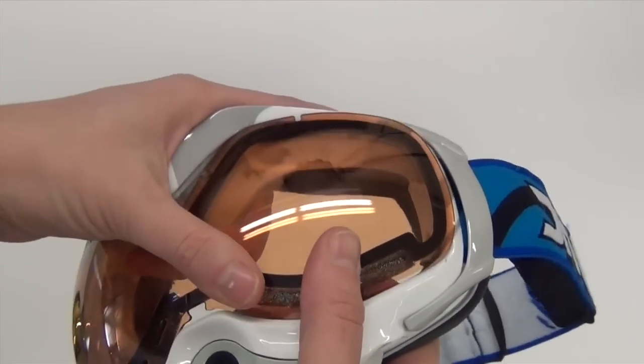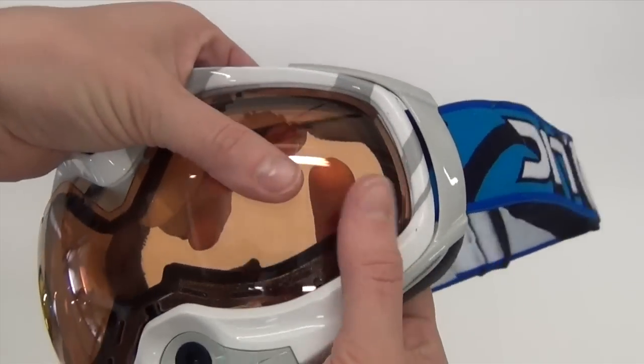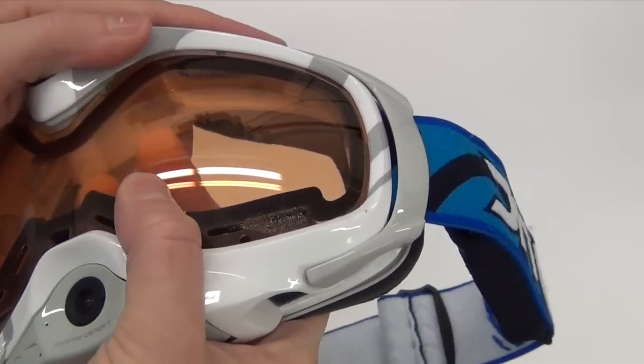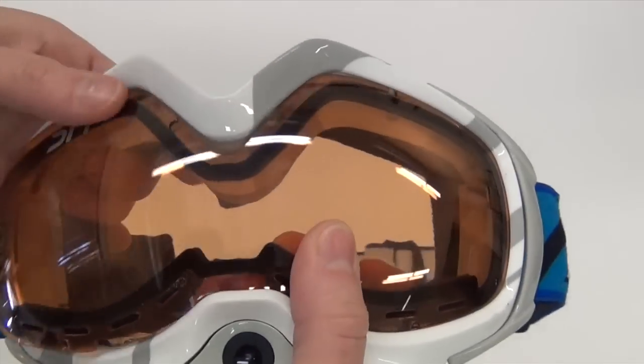Next, grab your other lens and begin to insert it. There's a slot where the lens will sit with little ridges inside it. Try to line up the notches in the lens with the ridges inside the slot.